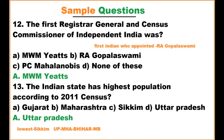The first Registrar General and Census Commissioner of independent India was whom? The options are MWM Yates, R.A. Gopalaswamy, and P.C. Mahalanobis. The answer is MWM Yates. However, if the question asks for the first Indian appointed, then the answer would be R.A. Gopalaswamy.